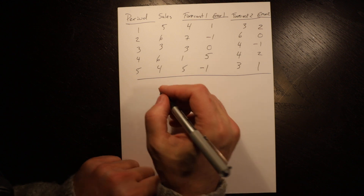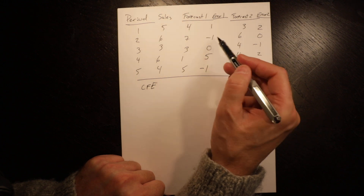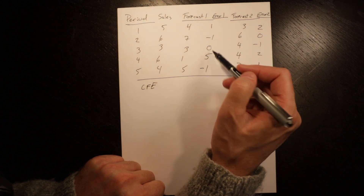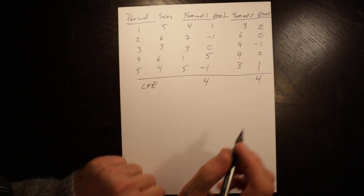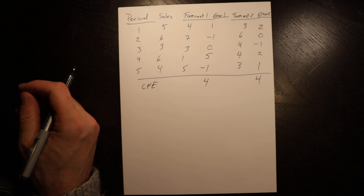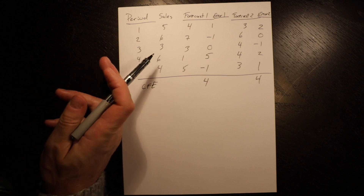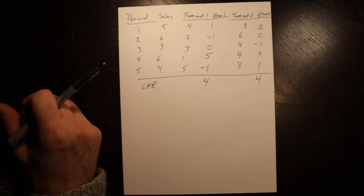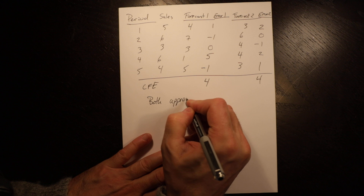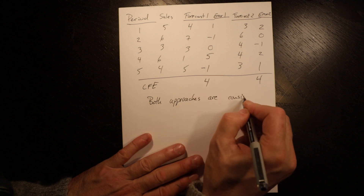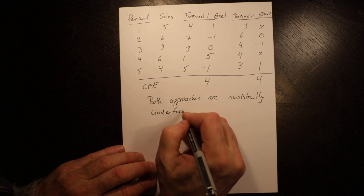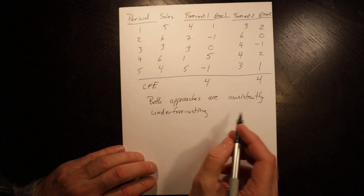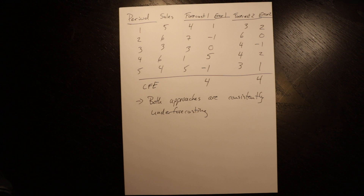The first measure we apply is cumulative forecast error, which is just the sum of the errors. For method 1: 1 plus negative 1 is 0, plus 0 is 0, plus 5 is 5, plus negative 1 is 4. For method 2 the sum is also 4. Both approaches have a cumulative forecast error of 4, meaning both are consistently under-forecasting. There's not one that has less bias than the other — both approaches have some bias.